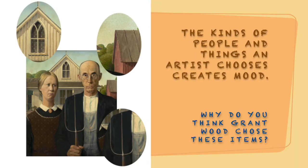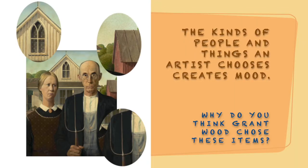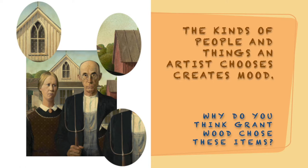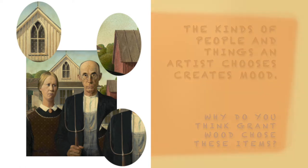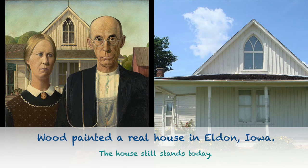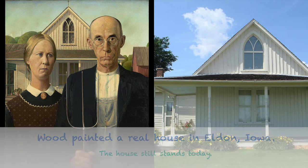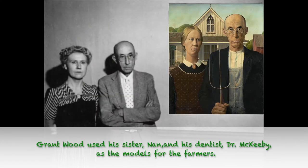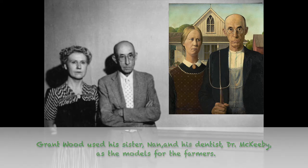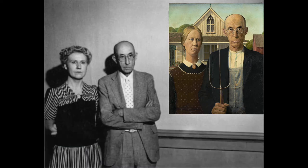Another way an artist creates mood is by the kinds of people and things they put in their work. American Gothic shows real people, a real house, and a real barn. Grant Wood used his sister and his dentist as models to show what farmers looked like in 1930.